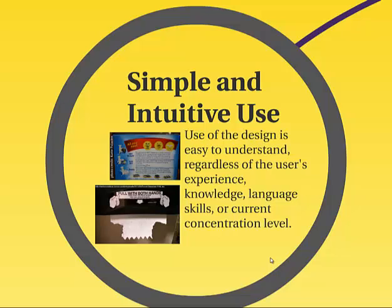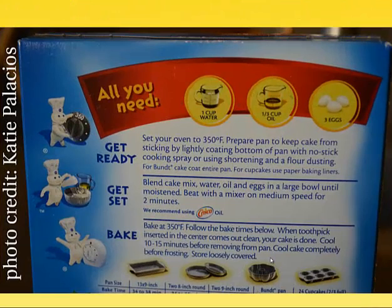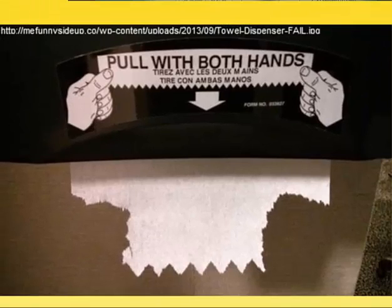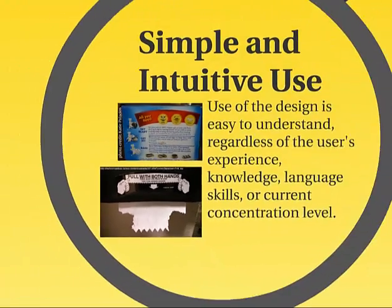Simple and intuitive use is next. Use of the design is easy to understand, regardless of the user's experience, knowledge, language skills, or current concentration level. Here we see the directions for a birthday cake — the directions use pictures for the ingredients along the top, pictures of the three steps along the left side, and different baking pans and times along the bottom. The directions are easy to follow. But sometimes directions that seem simple and intuitive in practice don't yield the desired result — they cause the most confusion and frustration.